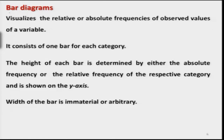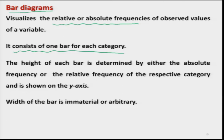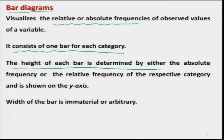Let me start with one of the very basic graphs: the bar diagram. The bar diagram is essentially used to visualize the relative or absolute frequencies of the data — or the relative or absolute frequencies of the values observed for a variable. This bar diagram consists of one bar for each category. One of the very important characteristics of the bar diagram is the height of the bar, which is simply proportional to the frequency or to the relative frequency, and this height is shown on the y-axis.